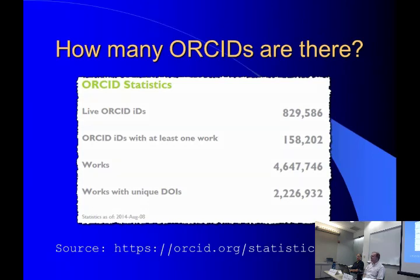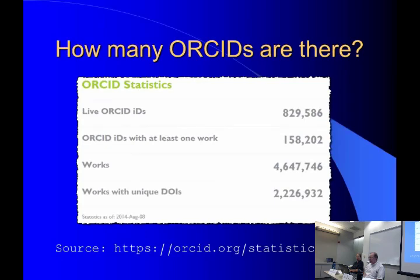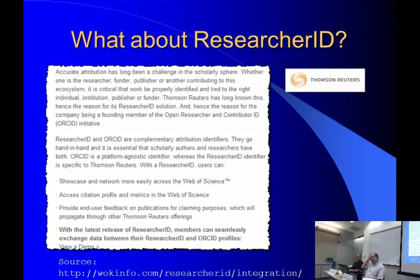Digital Object Identifiers — you will have seen these in many journal articles. They get assigned as a short URL to the journal article so that it doesn't depend on the publisher's URL, and this short identifier should persist even if the journal moves to another publisher or website. There is another researcher identifier called Researcher ID, which has been around longer — probably since the 1980s when Web of Science got started. ORCID is only a couple of years old.